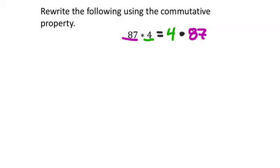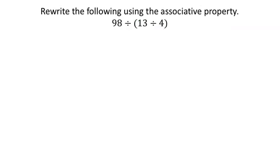Here we go, this one is using now the associative property. With the associative property, remember that the numbers' order is not going to change. So we've got 98, 13, and 4. In fact, the operation won't change, and I'm deliberately doing this.